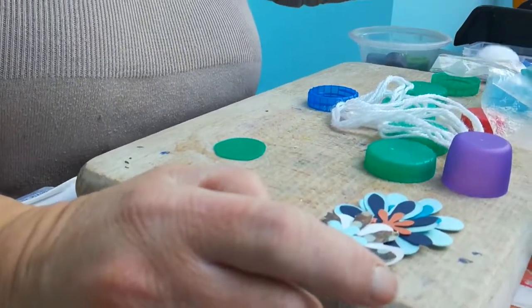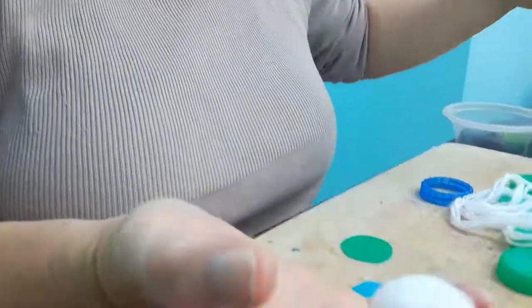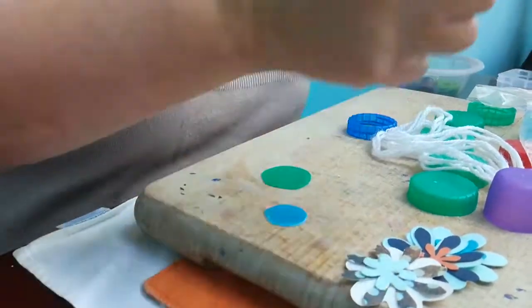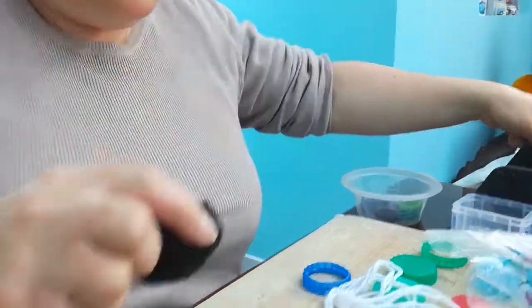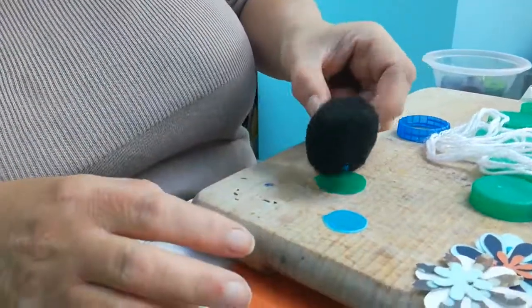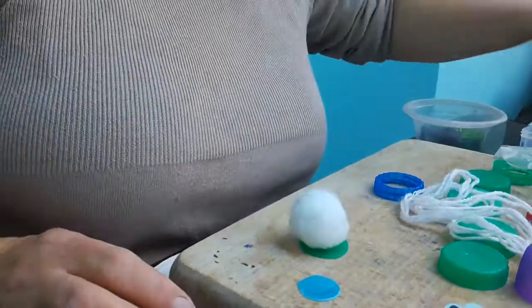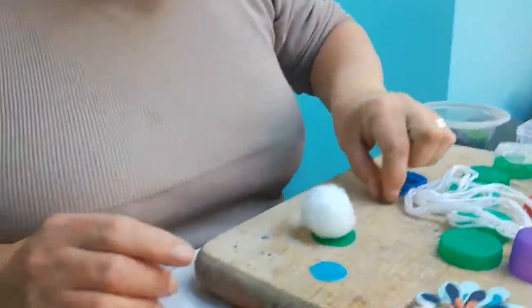So I have some flower petals so you could make a flower badge or a bead. I have some pom-poms like this, so you could if you wanted to... oh that one's a bit big... so make a little creature.